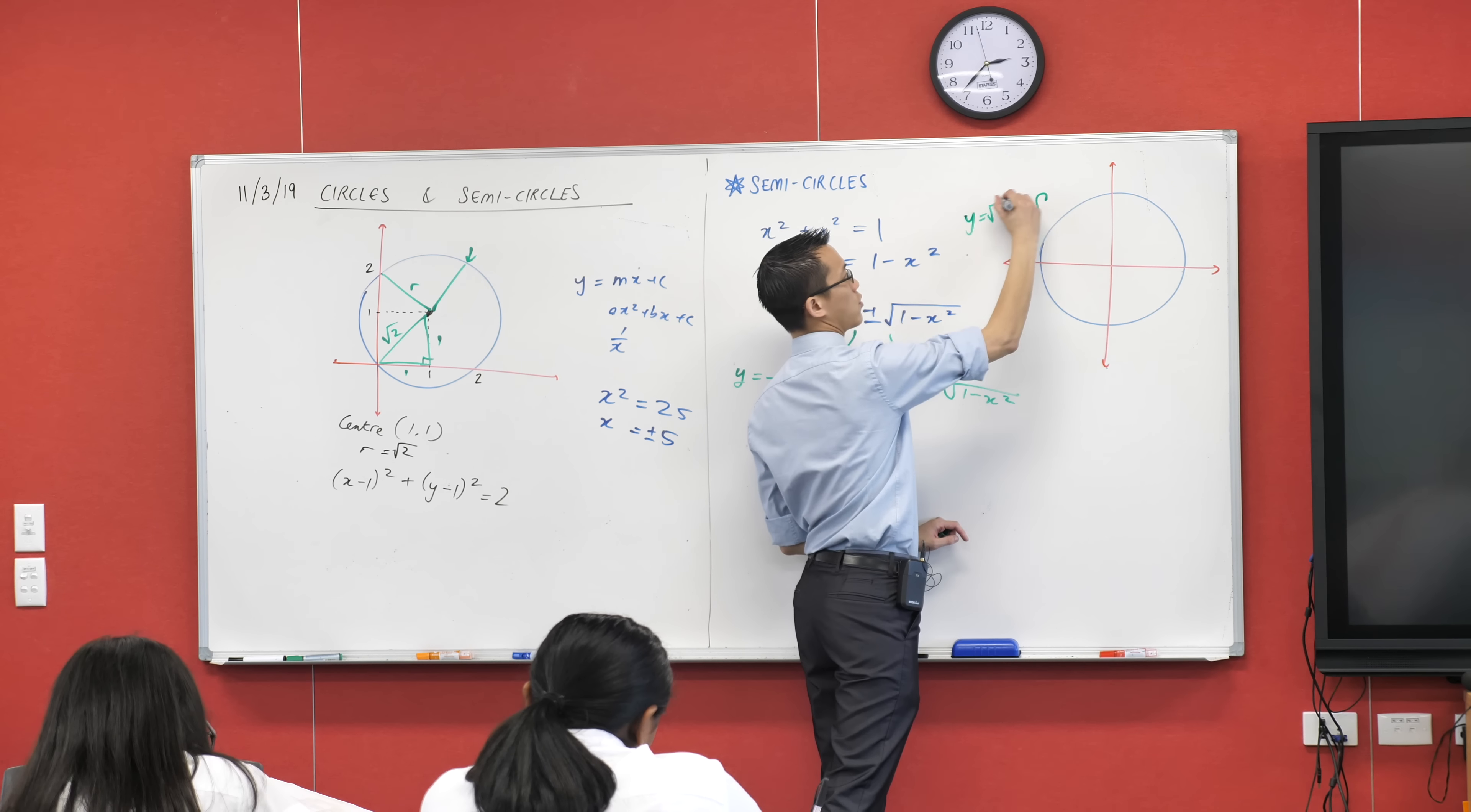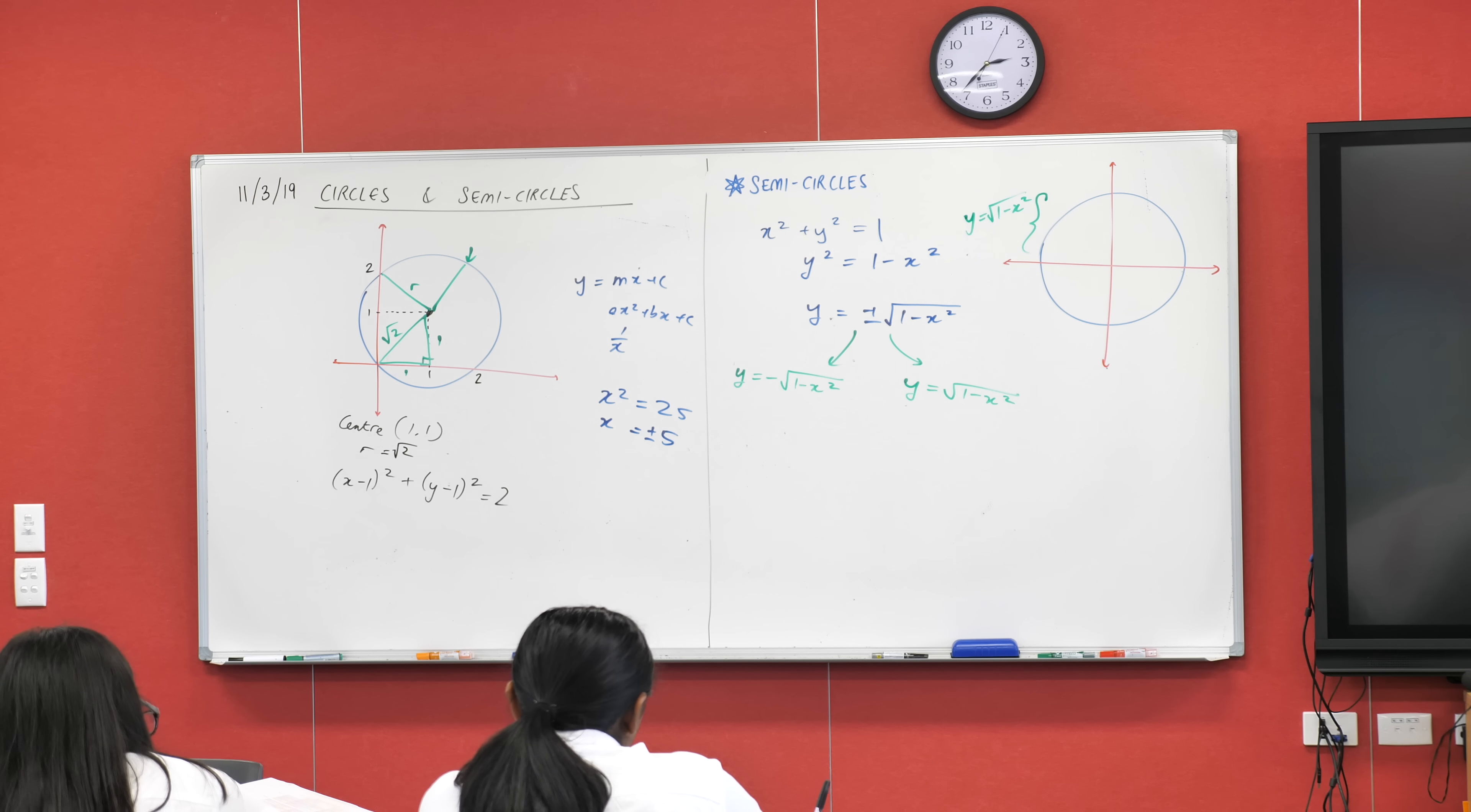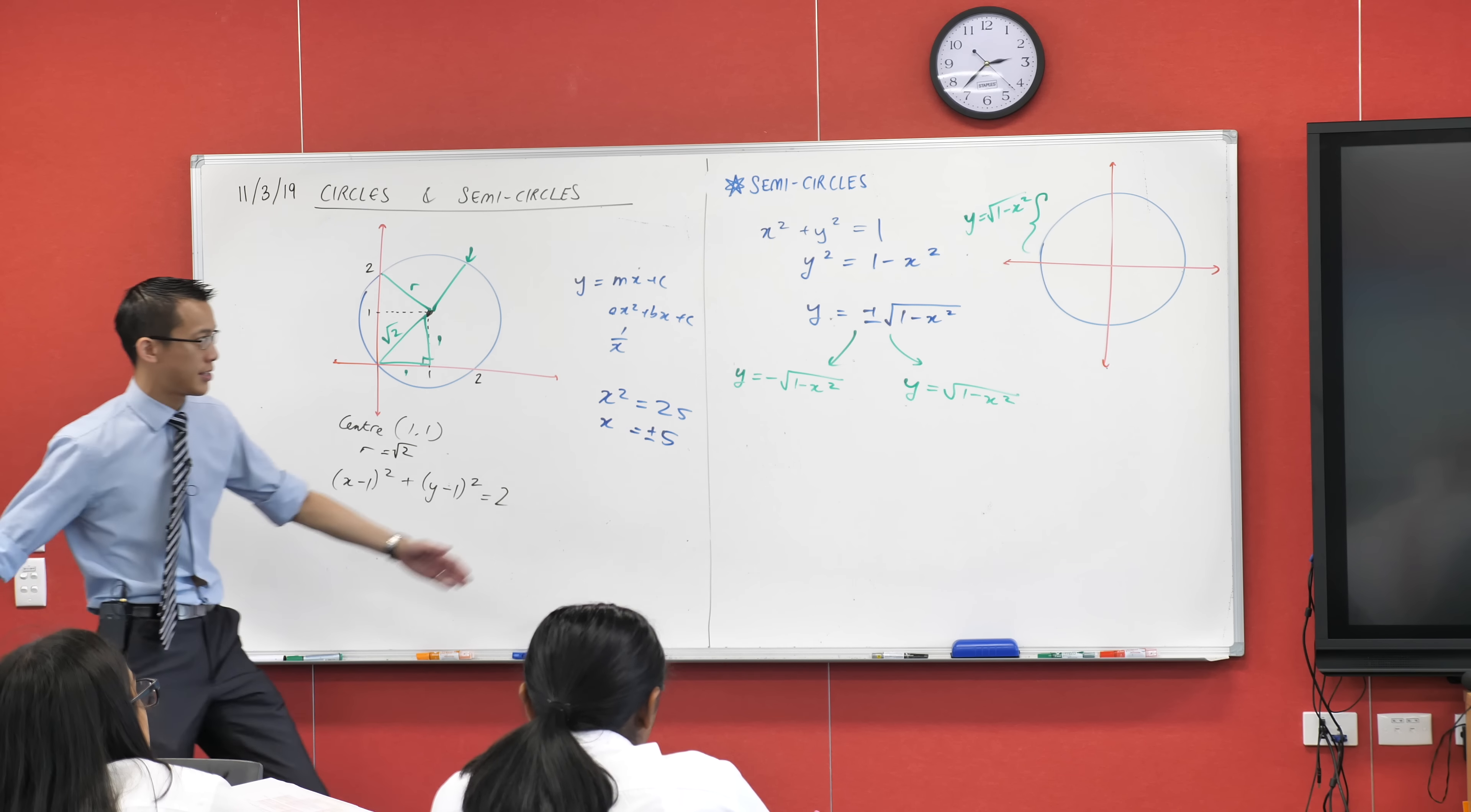This is y equals the square root of 1 minus x squared. You might have Desmos nearby. You might be able to chuck in y equals the square root of 1 minus x squared. There he is. So there's our semicircle, just like we expected.